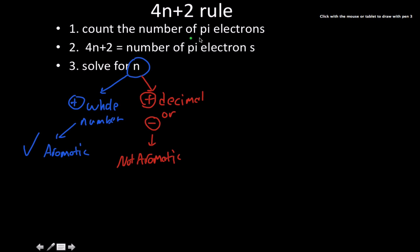So the first thing you want to do is count the number of pi electrons, and that's not always going to be so straightforward. The second thing you want to do is plug that into your 4n plus 2 and then solve for n, and then whatever you get for n can tell you whether or not it's an aromatic compound.